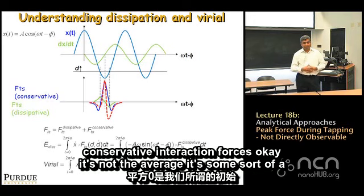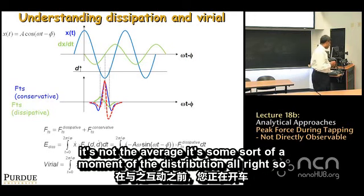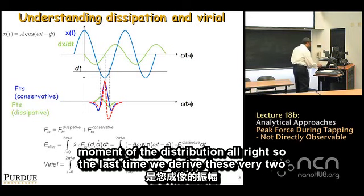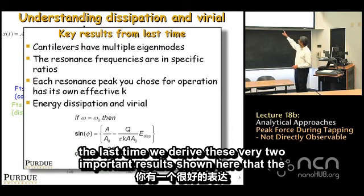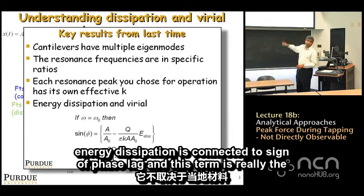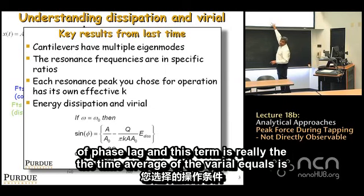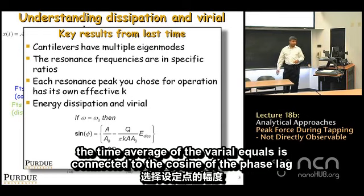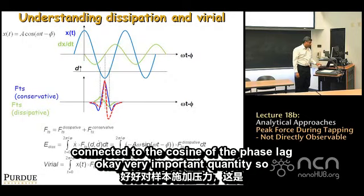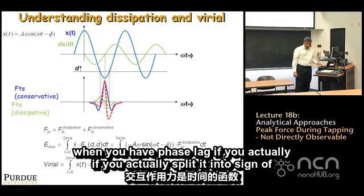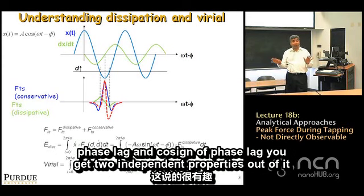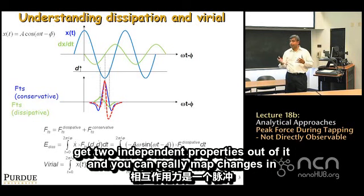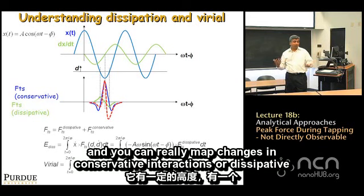The virial is not the average force — it is a moment where forces at extreme tip positions are weighted more heavily than forces near the center of oscillation. To summarize: energy dissipation is connected to sine of phase lag, and the time-averaged virial is connected to cosine of phase lag.